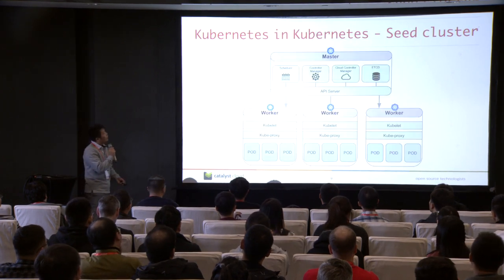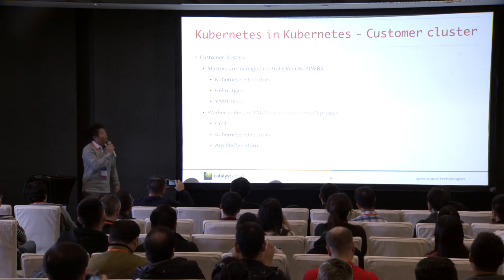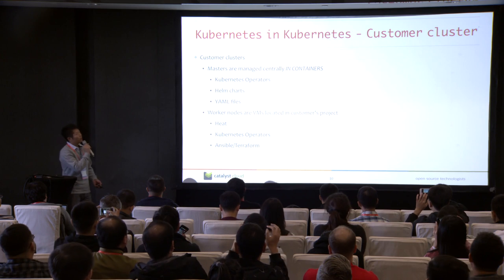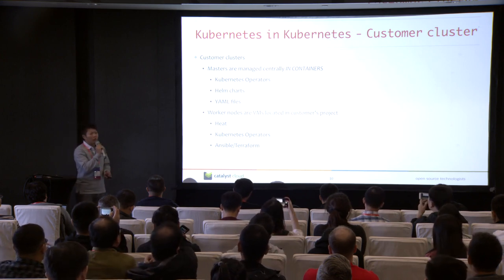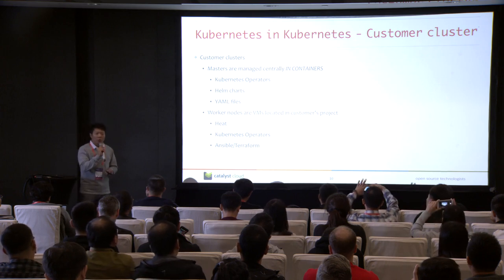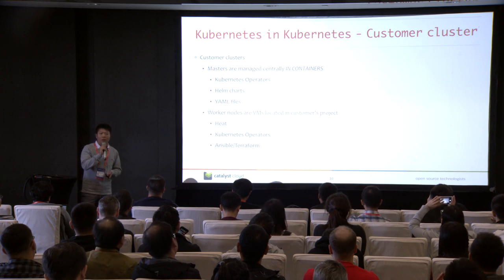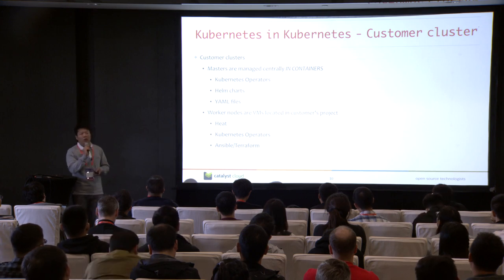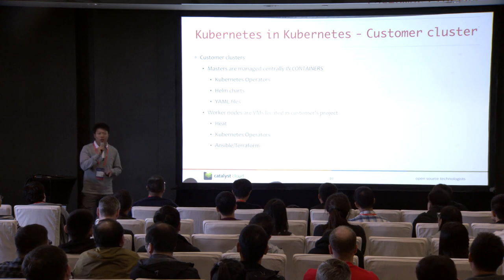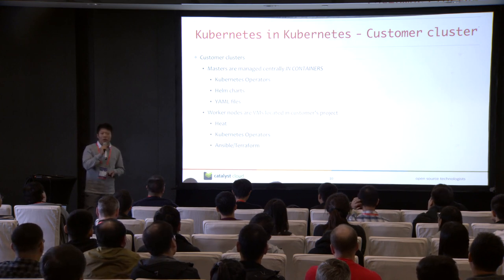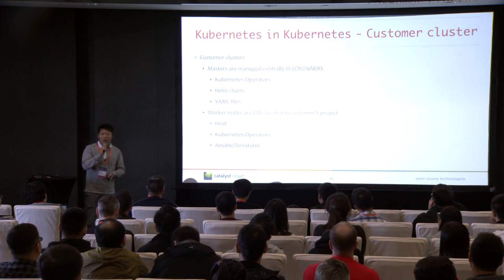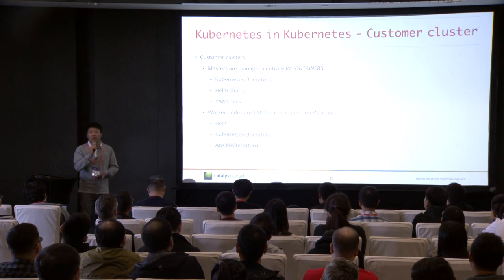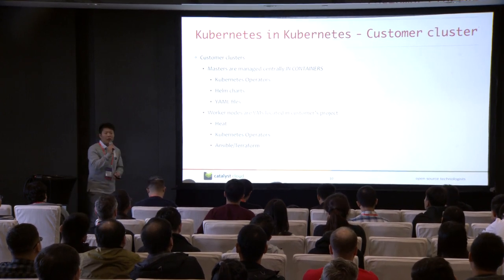All other tenant clusters are called customer clusters. All the Kubernetes controller services for the customer cluster are deployed as standard vanilla pods in the seed cluster. We can use Kubernetes features for managing those controller components — for example, the high availability of the controller components can be easily achieved using the internal auto-healing feature in Kubernetes. If one of the master pods goes down, the controller manager in the seed cluster can detect it and the pod can be rescheduled and redeployed quickly without any human interruption.